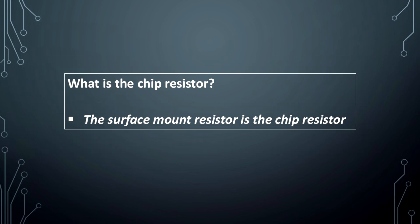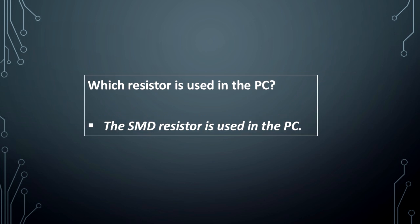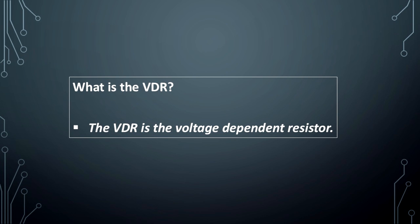What is the chip resistor? The surface mount resistor is the chip resistor. Which resistor is used in the PC? The SMD resistor is used in the PC. What is the VDR? The VDR is the voltage dependent resistor.